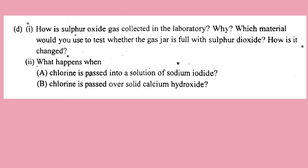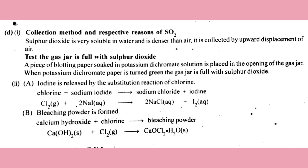How is sulfur dioxide gas collected in the laboratory? Which material would you use to test whether the gas jar is full with sulfur dioxide? Sulfur dioxide is very soluble in water and denser than air; it is collected by upward displacement of air. A piece of litmus paper soaked in potassium chromate solution is placed at the opening of the gas jar. When the potassium chromate paper turns green, the gas jar is full with sulfur dioxide.